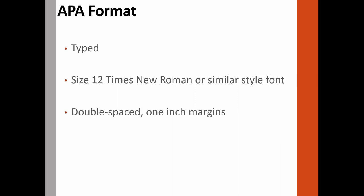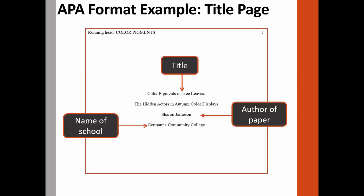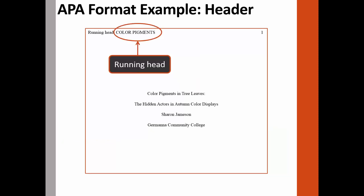APA also has a few other formatting elements and we will begin with the title page. Here is an example of a title page in APA. It will include the title of the paper, which should summarize the main idea of the paper, your name, and your institution's name. This information should be double spaced and centered between the left and right margins and positioned in the upper half of the page. The title page will also include the running head and the page number. The running head is an abbreviated version of the paper's title and it appears at the top of each page of the paper.